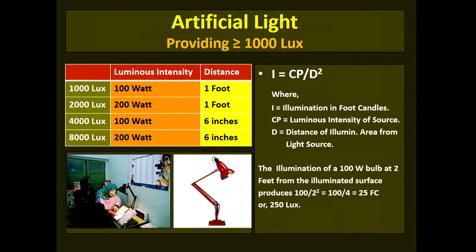For artificial light, the best option is an angle-poised lamp or a gooseneck lamp, because you can adjust the direction of illumination and the distance from the light source. The illumination from lamps is given by a formula where I stands for illumination in foot candles, CP is the luminous intensity of the source, and D is the inverse of the distance from the source to the illuminated area. Using this formula with your lamp wattage, you can calculate the required illumination.